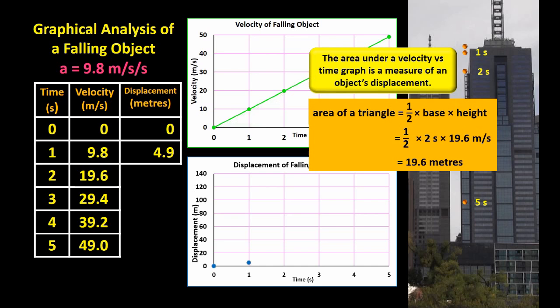After two seconds, the area under the Vt graph is half times 2 times 19.6, which equals 19.6 meters. This dot represents the information.